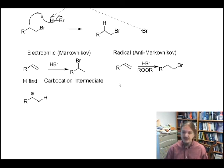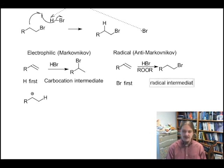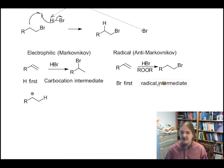On the radical version, as I just showed you, the bromine ends up attached first. And instead of a carbocation intermediate, we have a radical intermediate. And it ends up on the more substituted secondary carbon atom.